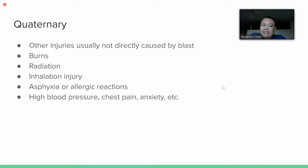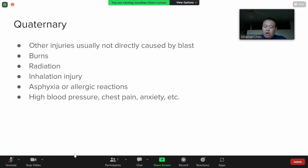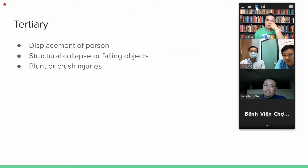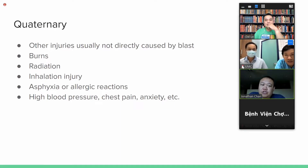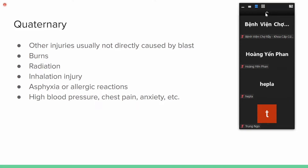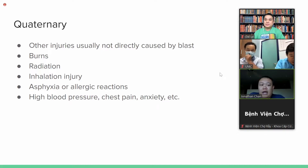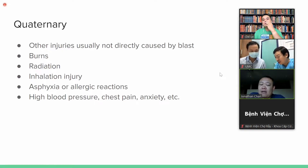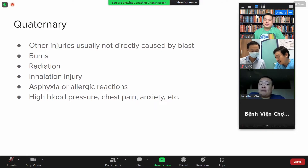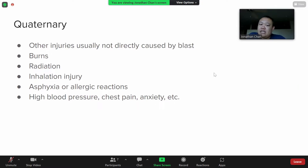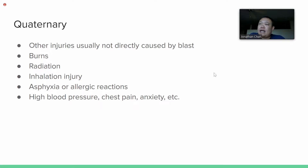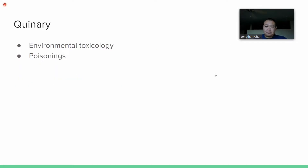The quaternary effects — level four — are not injuries caused directly by the blast, but things like burns from fire, radiation, smoke inhalation, asphyxia, or allergic reactions to dust or chemicals in the air. It could also include high blood pressure, anxiety, or chest pain as indirect consequences. The quinary effects — level five — involve poisoning, chemicals, or toxicology from the blast.